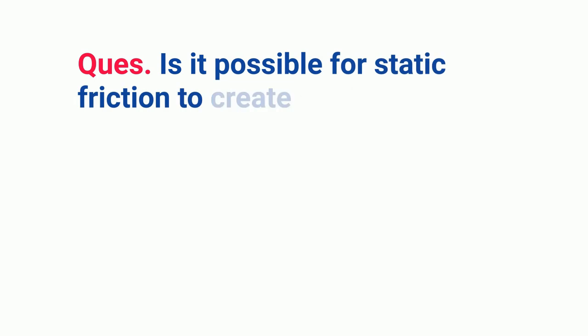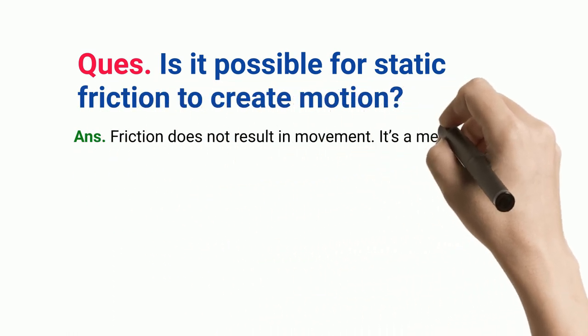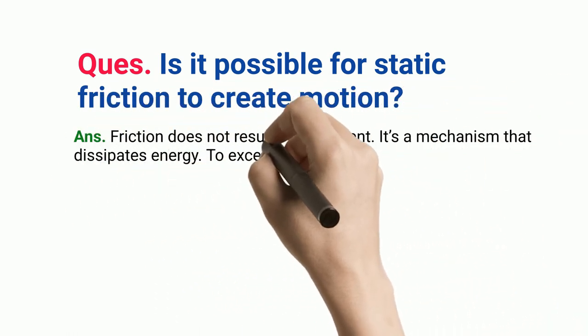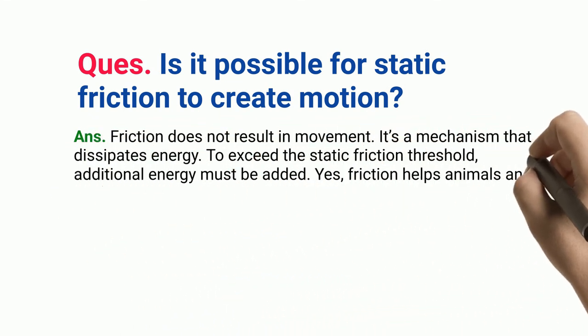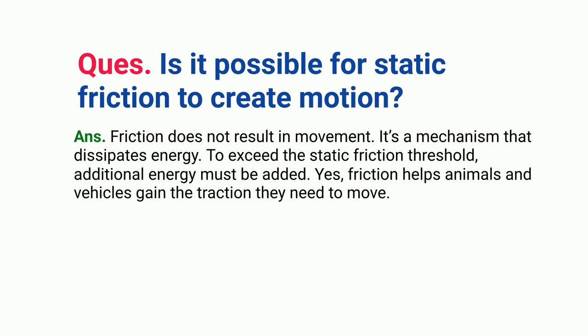Question: Is it possible for static friction to create motion? Answer: Friction does not result in movement. It is a mechanism that dissipates energy. To exceed the static friction threshold, additional energy must be added.